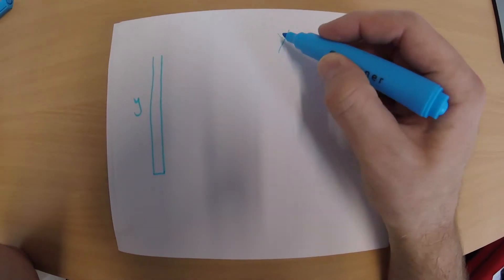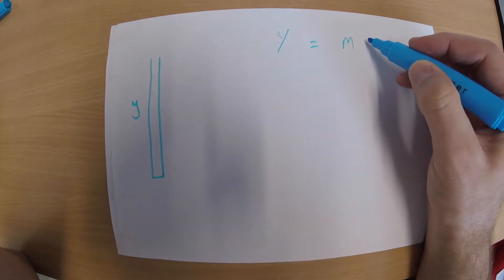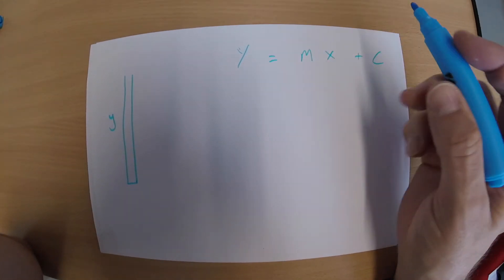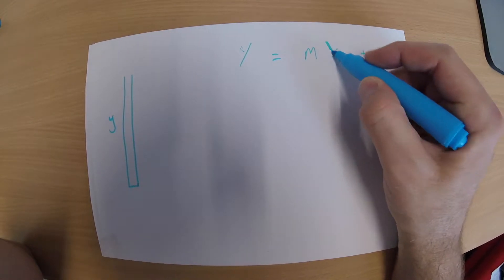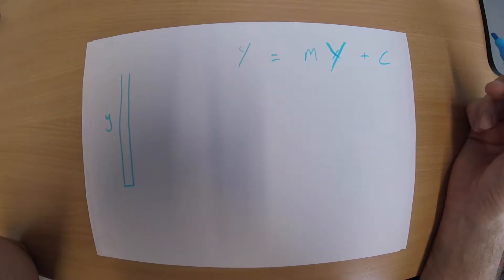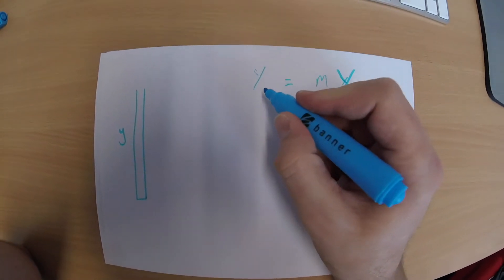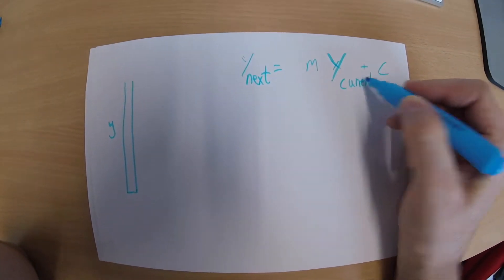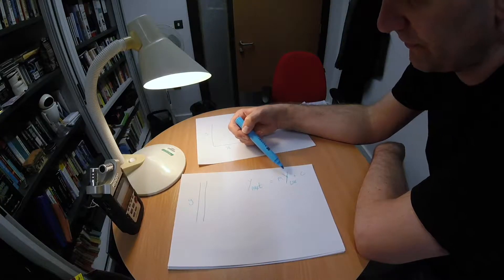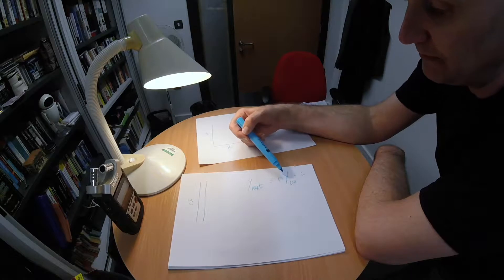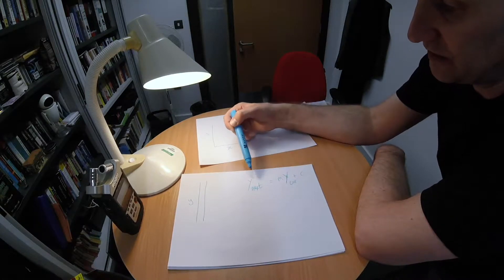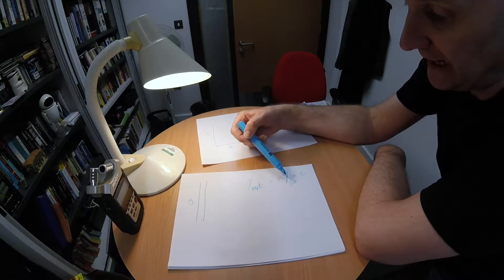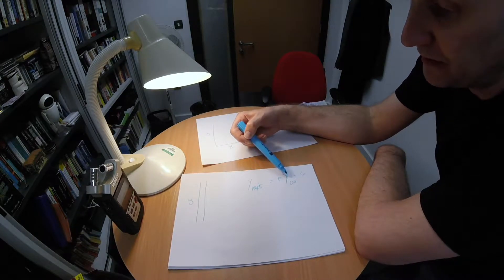So if we take this example: to iterate the equation y equals mx plus c, what we would do is, instead of having x there, we would have an alternative version of y. What this means is the next value of y is calculated using the current value of y. So to start this off, we think up a value for y — maybe it's just 1 — and then we calculate the next value of y equals m times 1 plus c. That gives us our first result, and then that first result goes back to become the current value of y, which is used to calculate the next one.